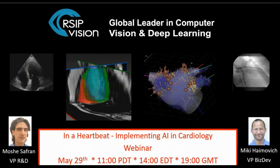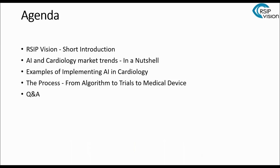Hello everyone and thank you for joining us. My name is Miki Chaimovic. I'm VP of Business Development with RSIP Vision, a global leader in computer vision and deep learning. For this webinar I will be hosting Moshe Zafran, our VP of Research and Development. The topic of the day is: In a Heartbeat — Implementing AI in Cardiology.